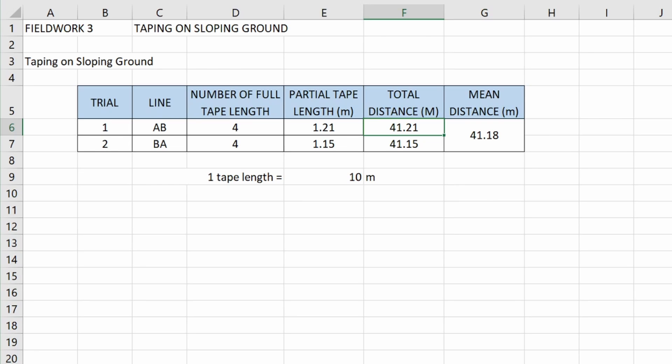And then for trial 2, it's BA. So it's down the slope. Once again, number of full tape length is 4. Partial now is 1.15. Total distance is 41.15. And then mean distance is just the average of the two.